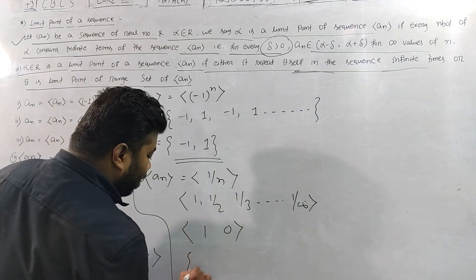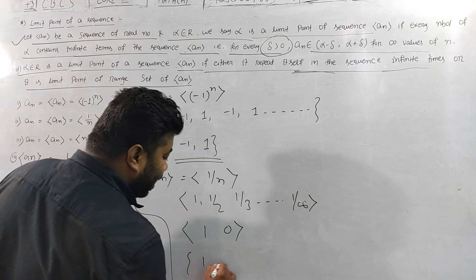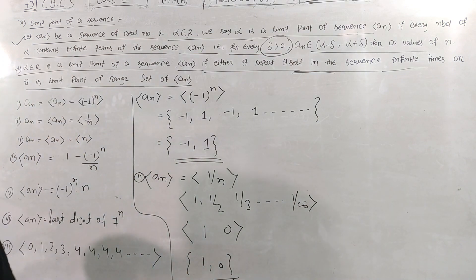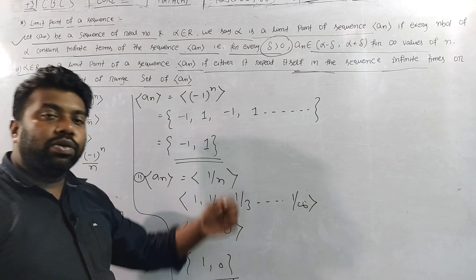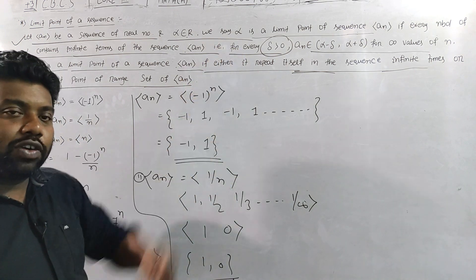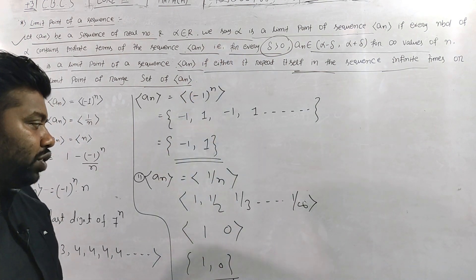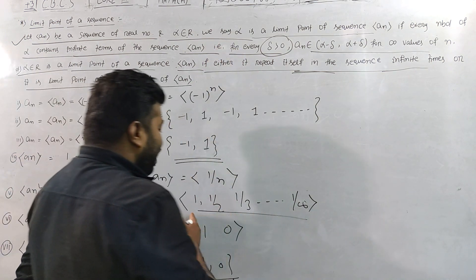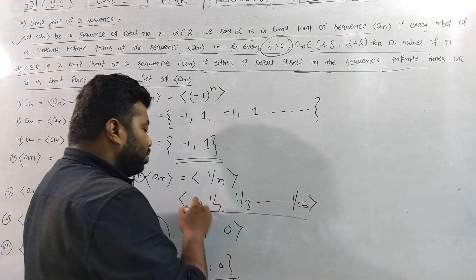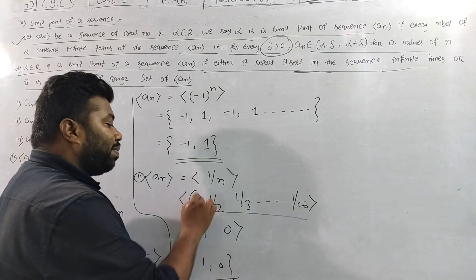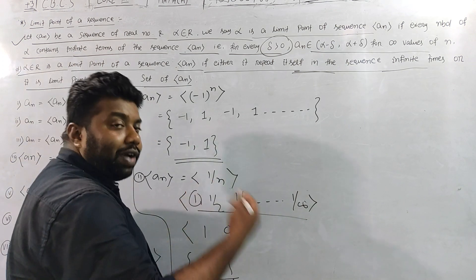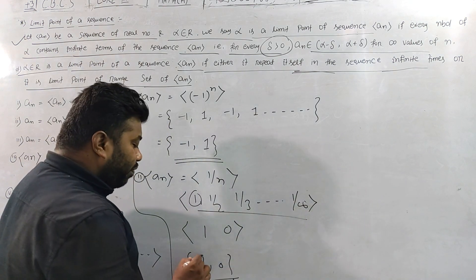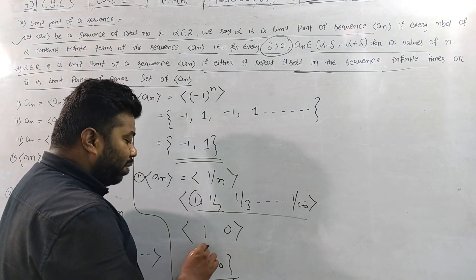So one of the values is zero. Zero is a limit point. The sequence 1/n is a decreasing sequence: 1, 1/2, 1/3, 1/4, and it decreases toward zero, so zero is the limit point.